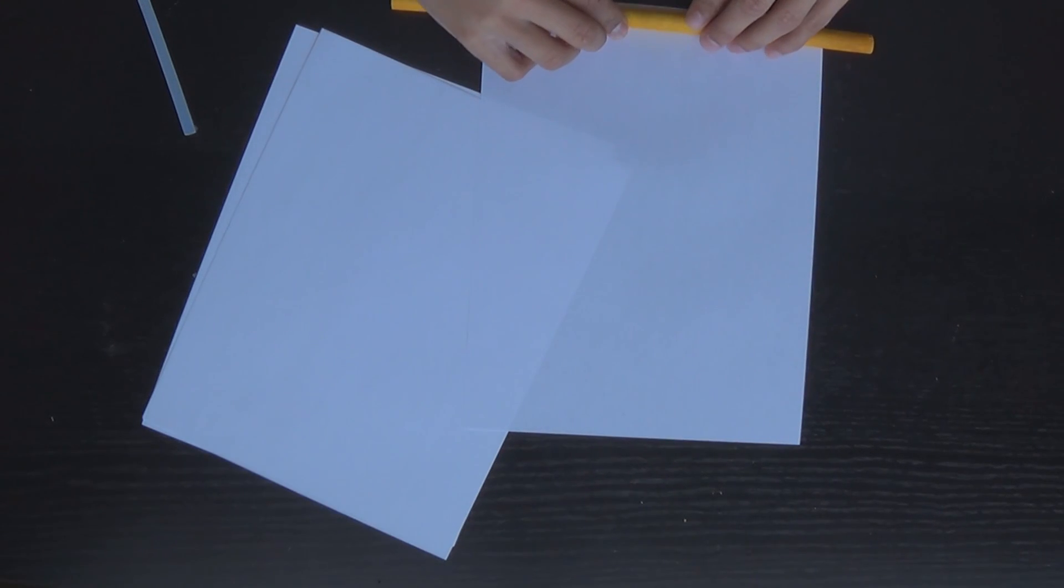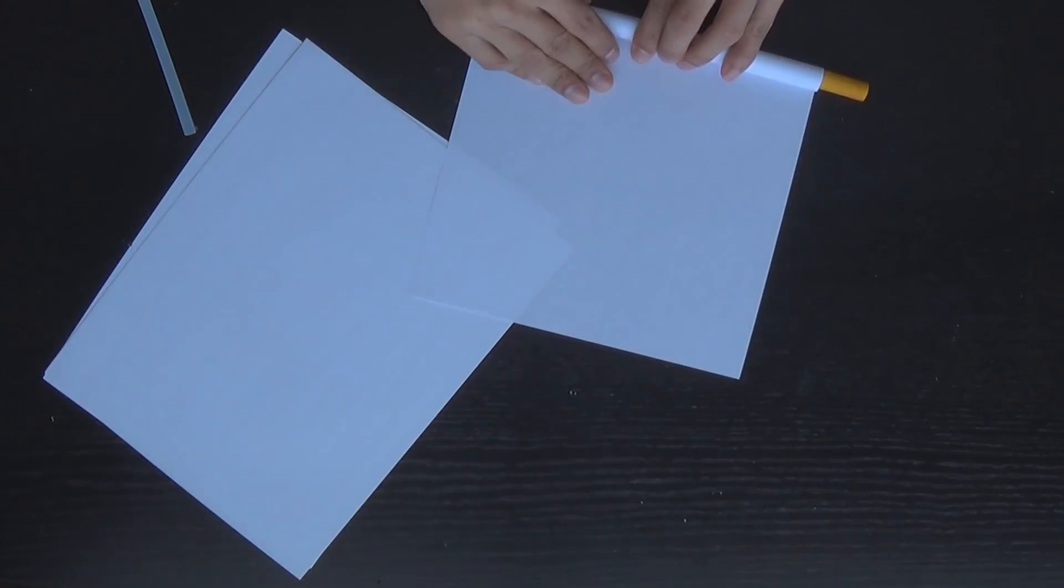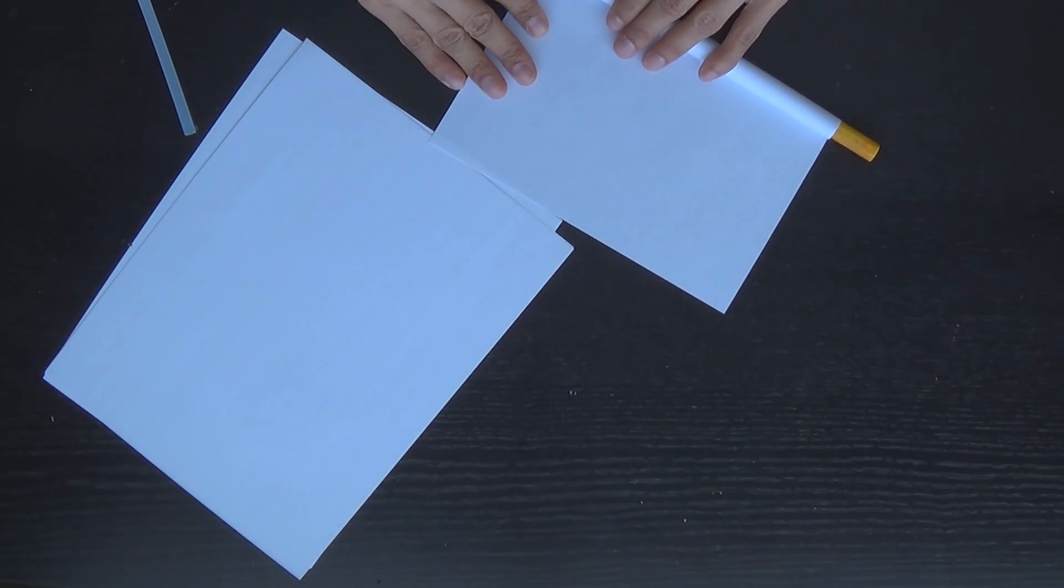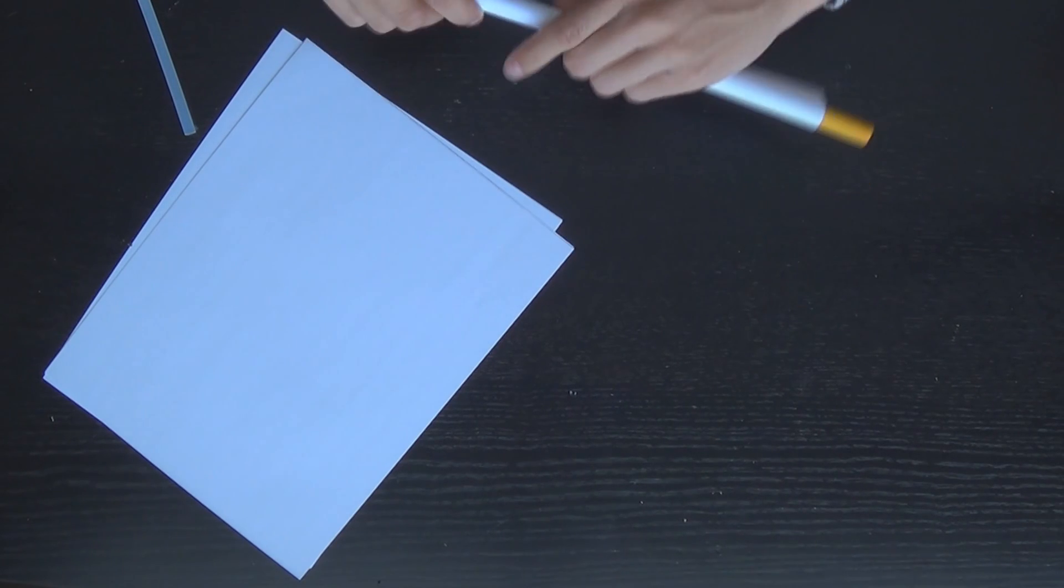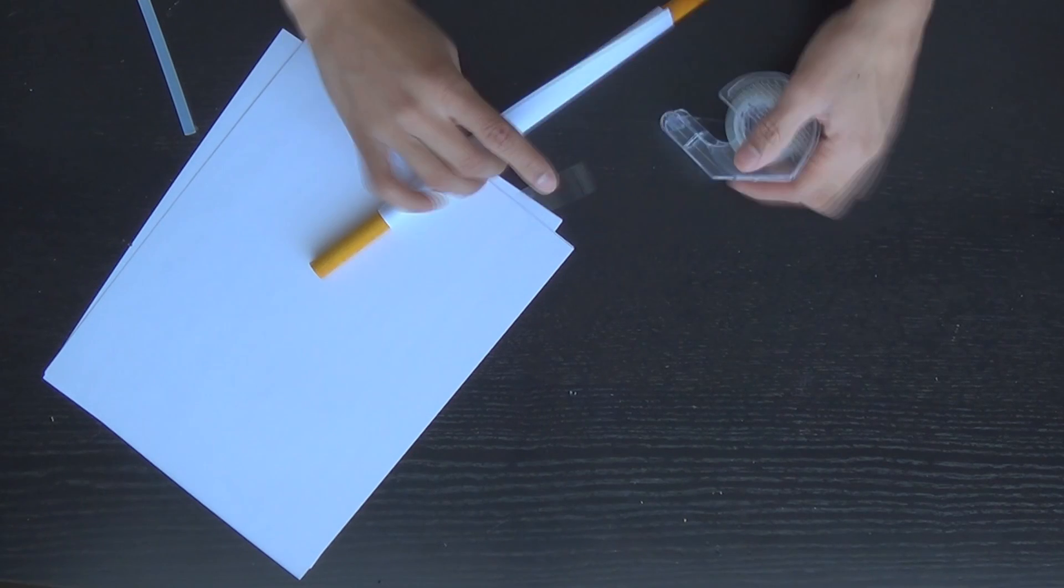So to start off the build we're going to start by using this dollar store dowel right here and rolling a sheet of paper around it. Now we're going to have to do this a few times so I'm just going to show you the basics of it. Roll it up around the dowel and tape it off.